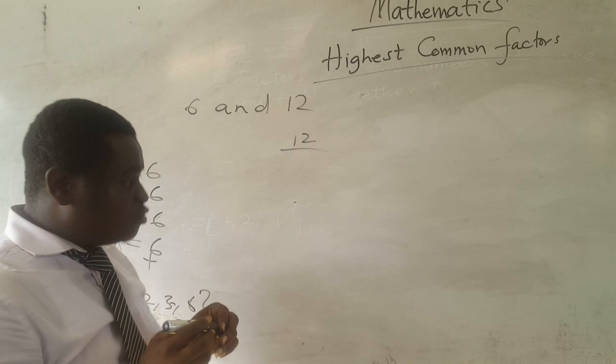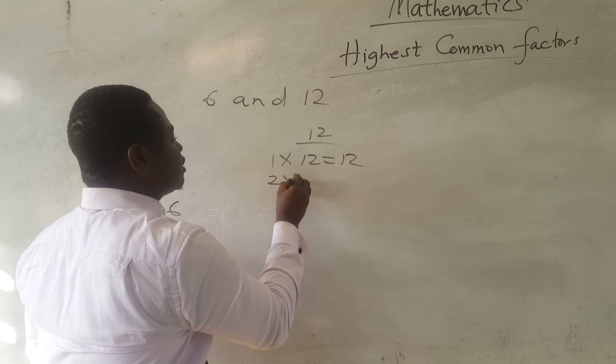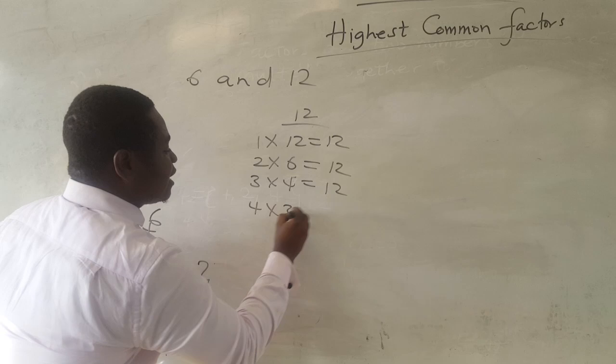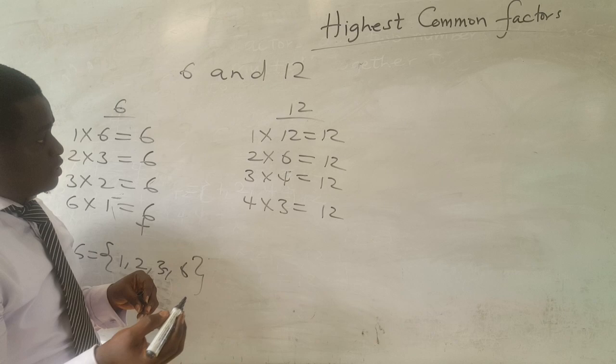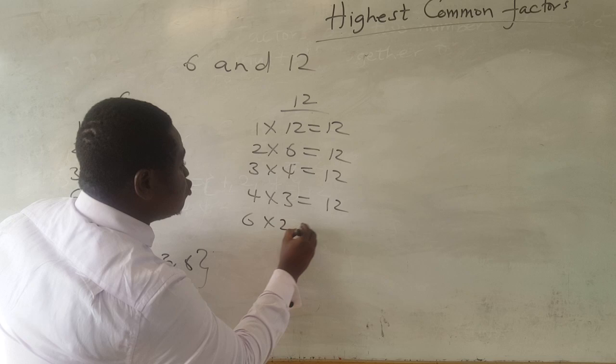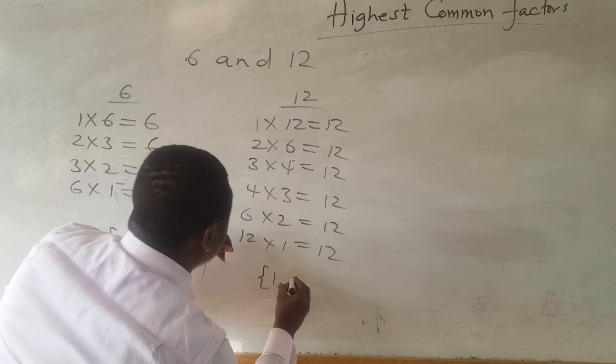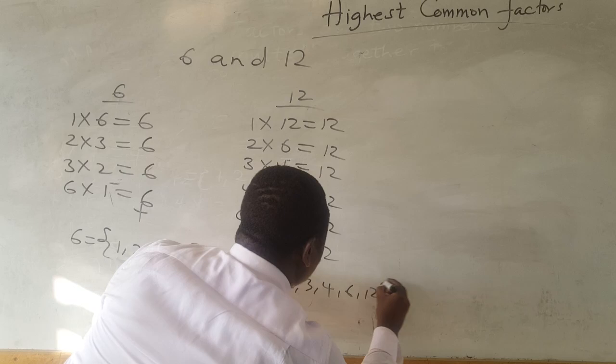Let's also look at the factors of twelve. One times twelve equals twelve. Two times six is also equal to twelve. Three multiplied by four equals twelve. Four multiplied by three equals twelve. Six multiplied by two is also equal to twelve. And twelve multiplied by one is also equal to twelve. So the factors of twelve are one, two, three, four, six, and twelve itself.